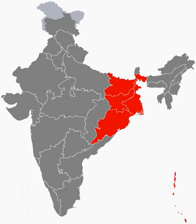Pataliputra was a seat of learning and fine arts. Its population during the Maurya period was about 400,000. The modern city of Patna is situated on the southern bank of the Ganges and also straddles the rivers Son, Gandak and Punpun. The city is approximately 35 km long and 16 to 18 km wide. It is the second largest city of eastern India. In June 2009, the World Bank ranked Patna second in India after Delhi for ease of starting a business.